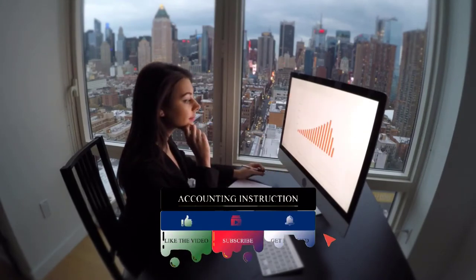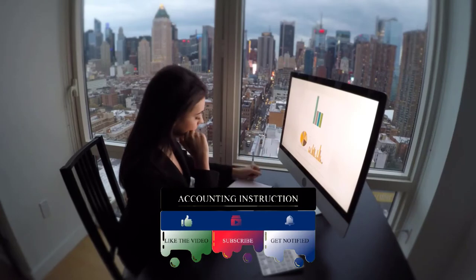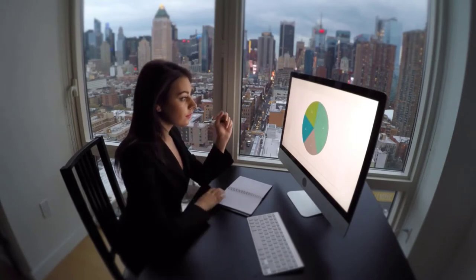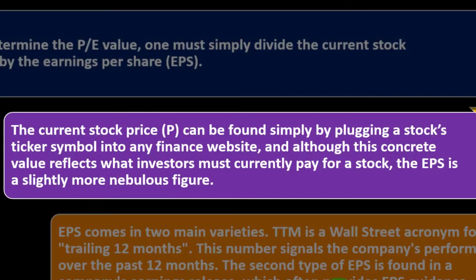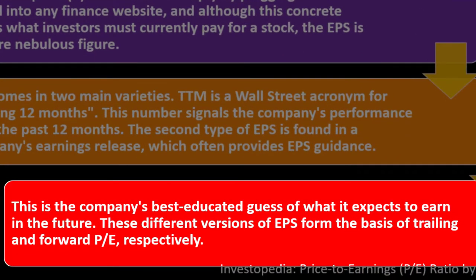The stock price is determined by the stock market. Stocks are uniform in nature — corporations break out ownership into equal units of stock typically traded on the exchange for publicly traded companies. Since all shares of the same stock are identical, the market helps determine the price. Earnings per share comes in two main varieties. TTM is a Wall Street acronym for trailing 12 months, signaling the company's performance over the past 12 months. The second type is found in a company's earnings release, which often provides EPS guidance — the company's best educated guess of what it expects to earn in the future.